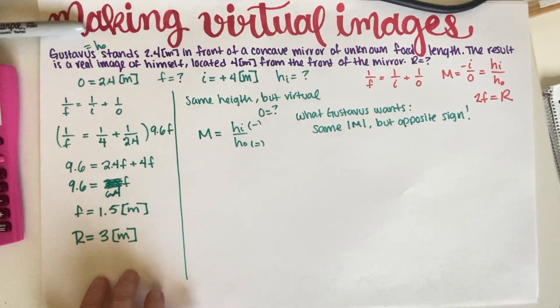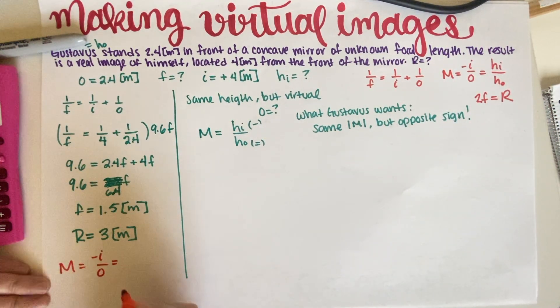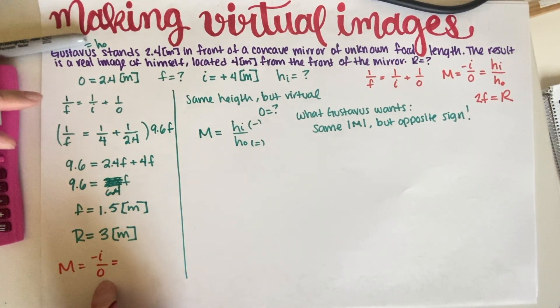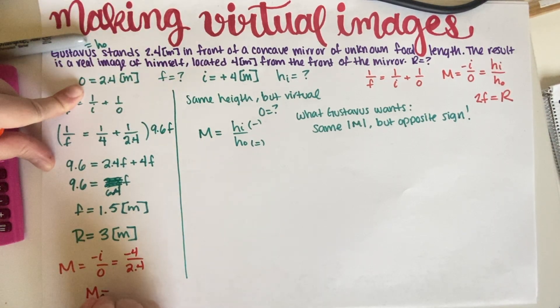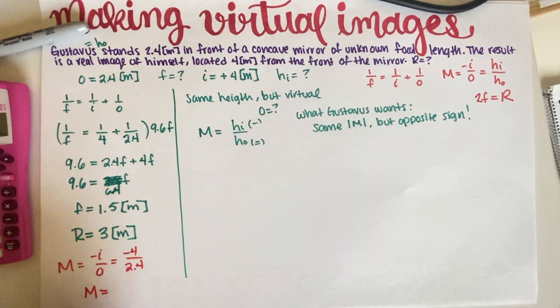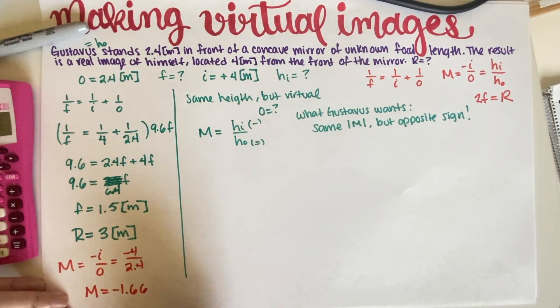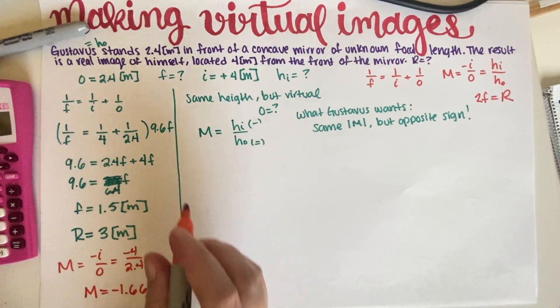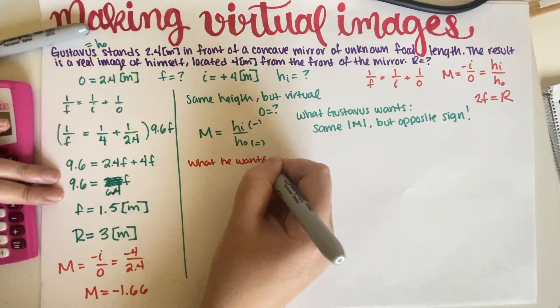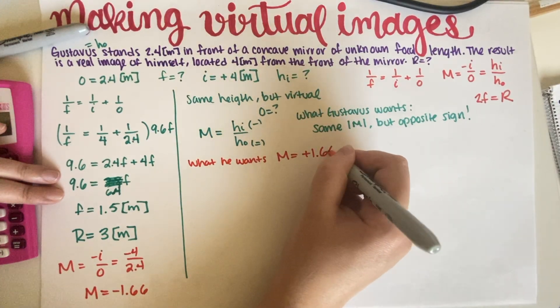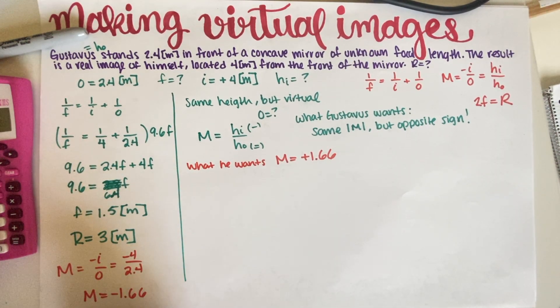So, magnification for part A, let's just multiply. Magnification is just negative I over O. So magnification is negative I, so negative 4 over O, 2.4. So the magnification for part A should have been negative 4 divided by 2.4, negative 1.66. So basically the magnification that he wants now is for M to be positive 1.66. Okay, so this is what he wants. And now based on this, we have to figure out where he has to stand.